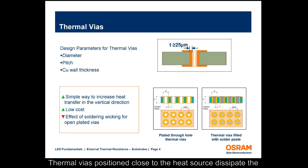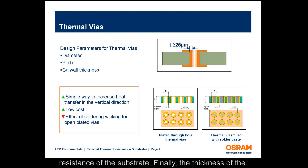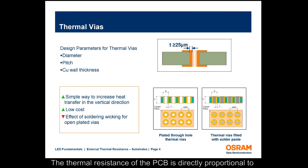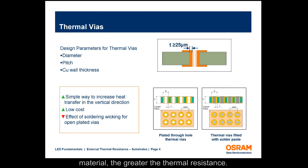Thermal vias positioned close to the heat source dissipate the heat more efficiently and thereby reduce the thermal resistance of the substrate. Finally, the thickness of the FR4 PCB also plays a role in the vertical conduction of heat. The thermal resistance of the PCB is directly proportional to the thickness of the material, meaning the thicker the PCB material, the greater the thermal resistance.